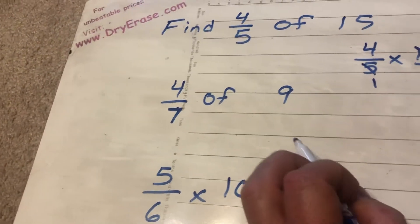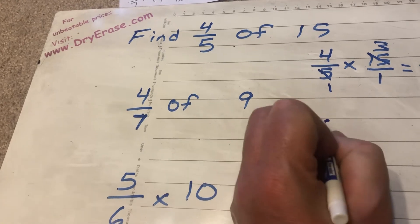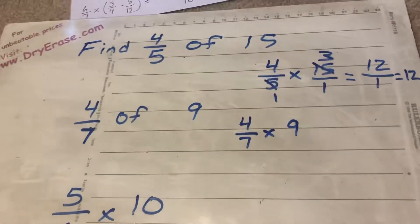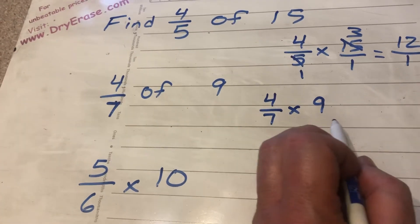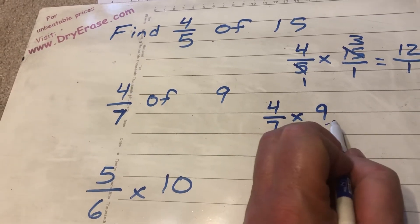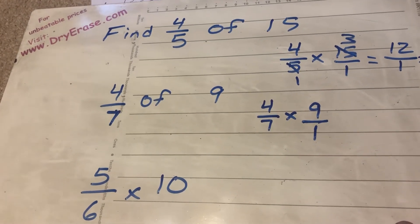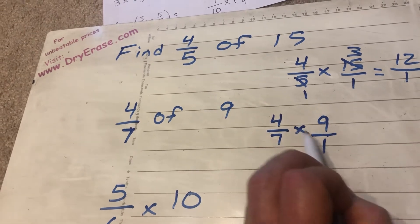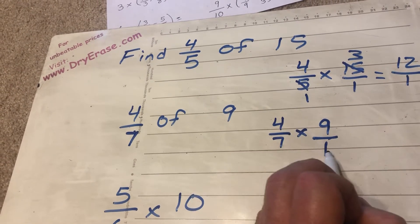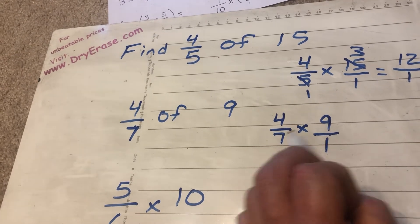Alright, well 4 sevenths of 9. 4 sevenths of 9 is just 4 over 7 times 9. And once again making everything a fraction. 4 sevenths is already a fraction. 9 has to become 9 over 1. Well so step 2 tells me to cross-check. Nothing besides 1 can go into both 1 and 4. So I can't cross-check there.